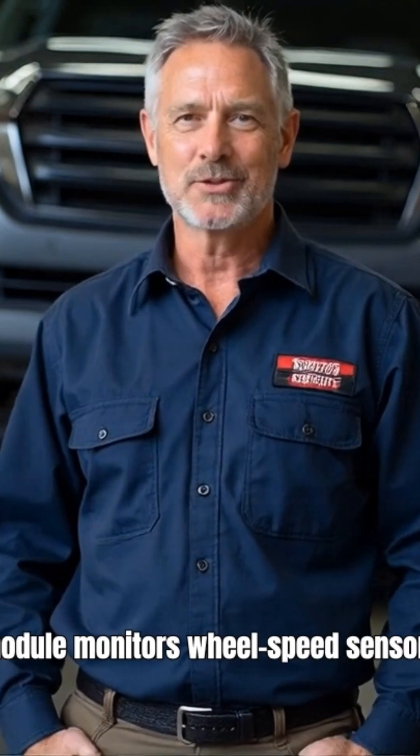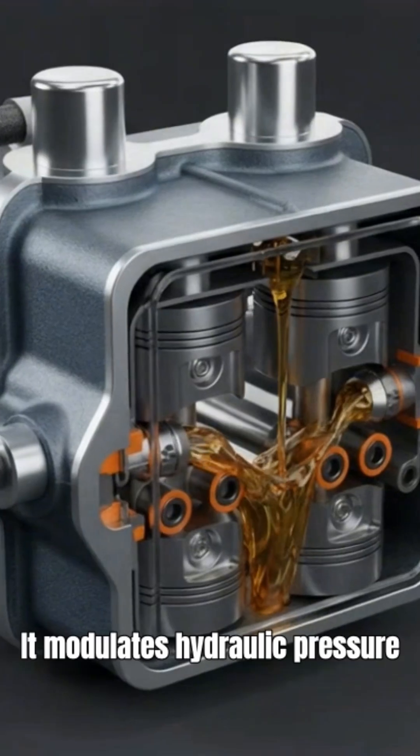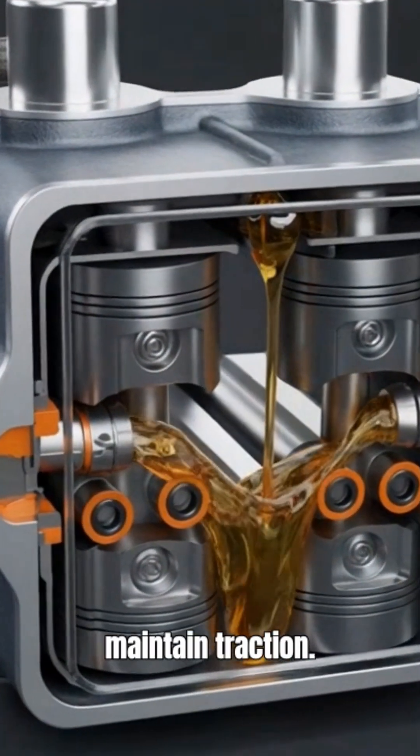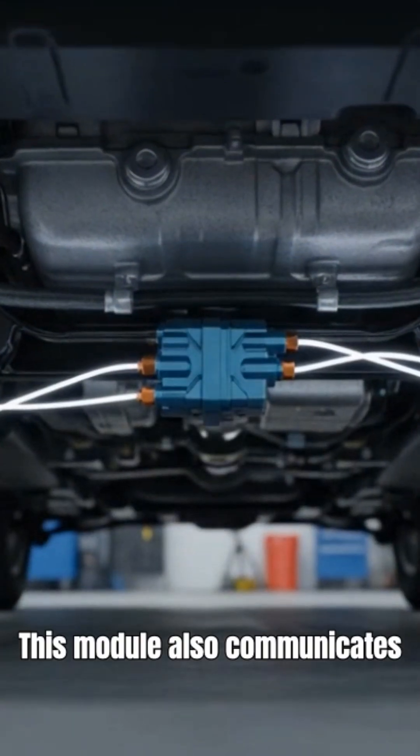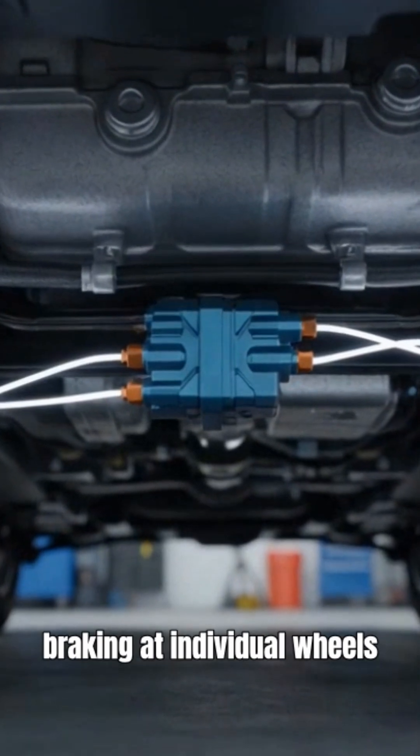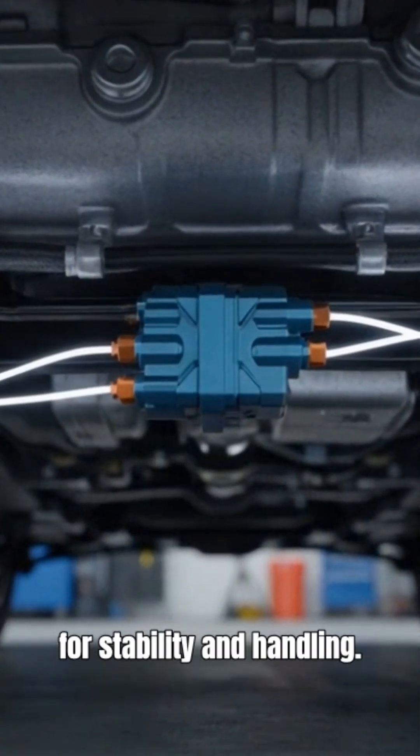The Land Cruiser's ABS module monitors wheel speed sensors to prevent wheel lockup. It modulates hydraulic pressure using solenoid valves to maintain traction. This module also communicates with the electronic stability control system to adjust braking at individual wheels for stability and handling.